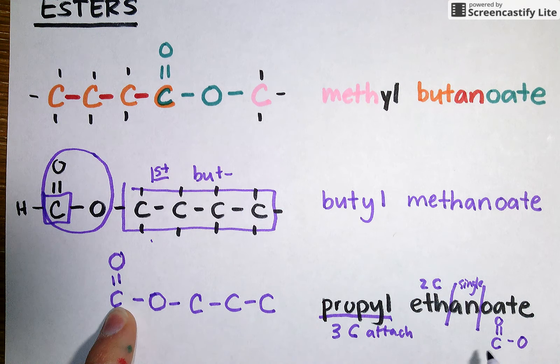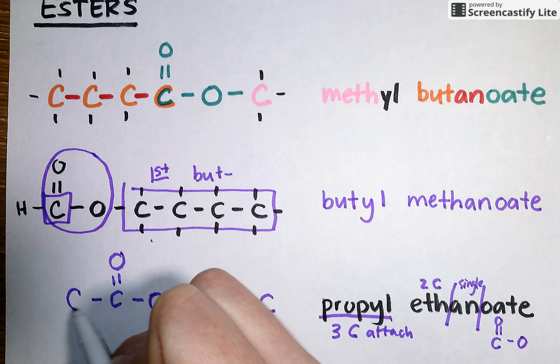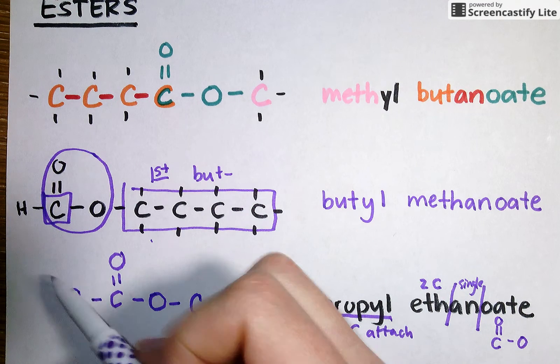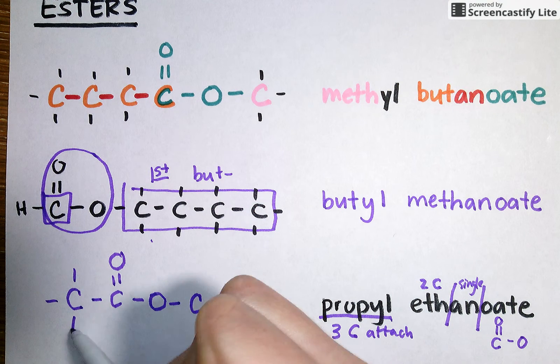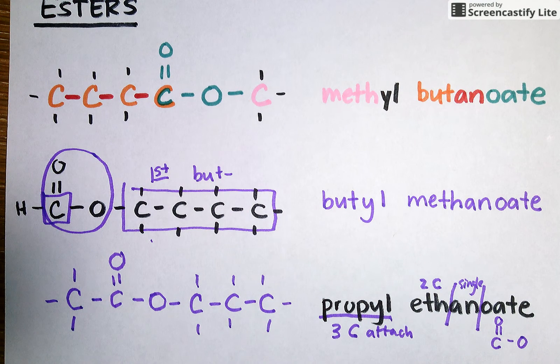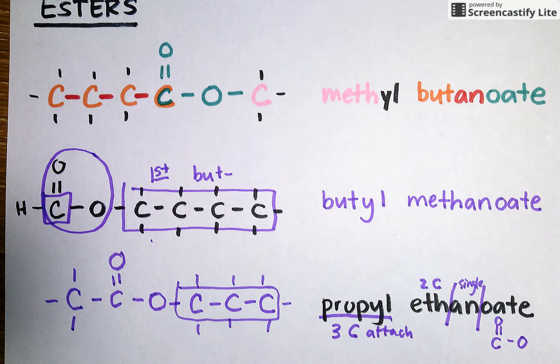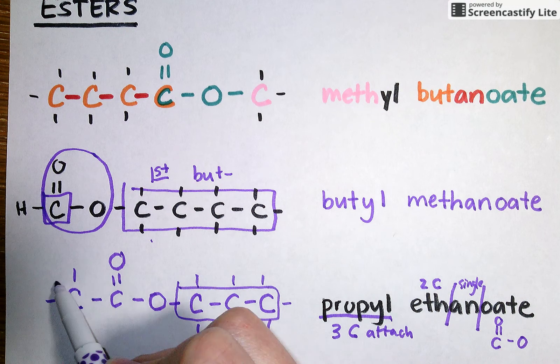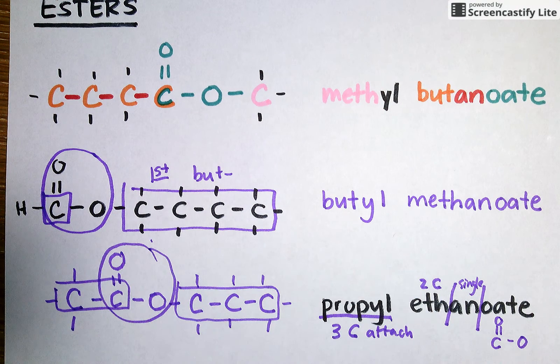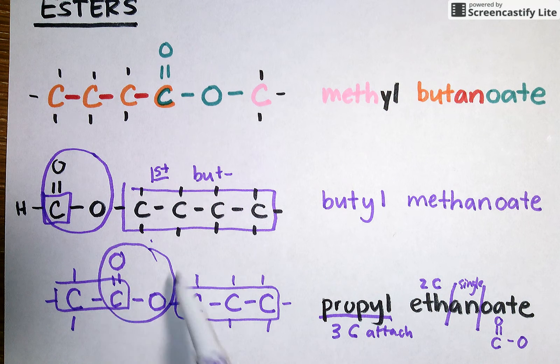And now I've already drawn one of my two carbons that I need. So all I need to do to finish this molecule off is draw in the second carbon from the eth prefix and fill in with whatever hydrogens I need to give every carbon four bonds. So what I've now drawn is propyl, three carbons attached to two carbons with the ester functional group in the middle, propyl ethanoate.